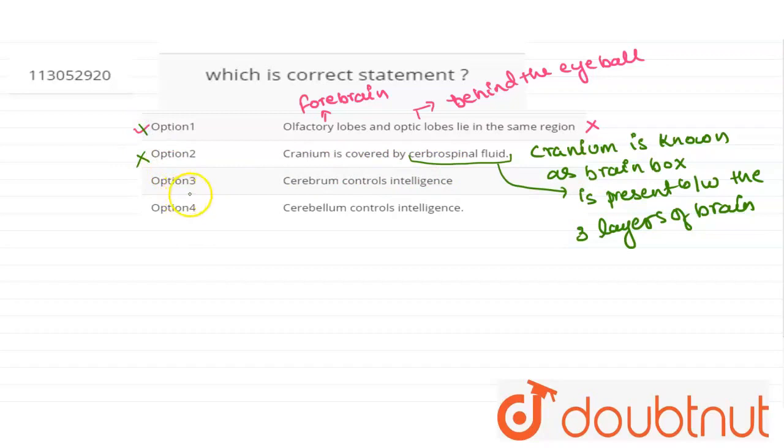If we talk about option number 3, cerebrum controls intelligence. This option is right because cerebrum is part of forebrain and it is responsible for the intelligence power of our brain.